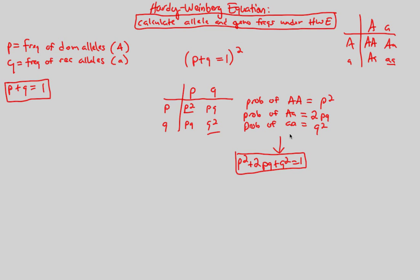Now let's look at an example to see how powerful this tool really is. We have a parental generation represented by an allele frequency. The parental generation has the following allele frequency for capital A.